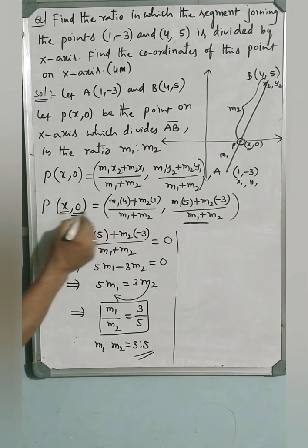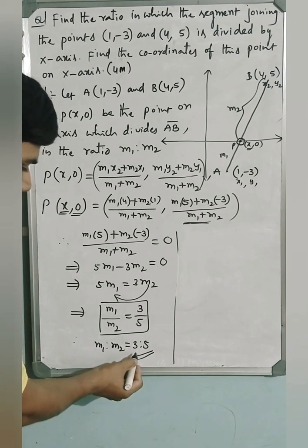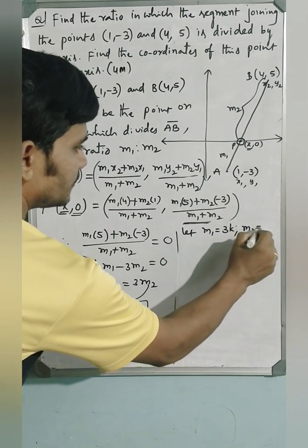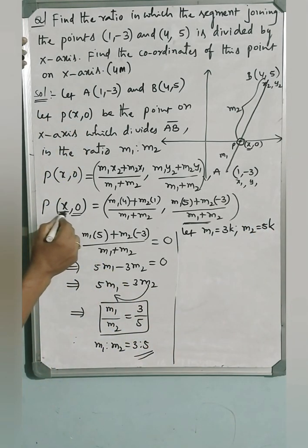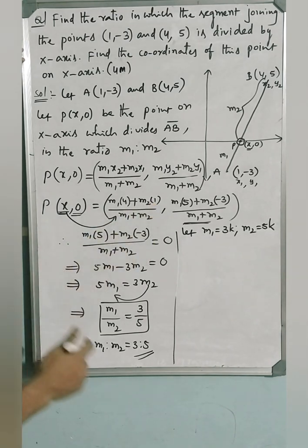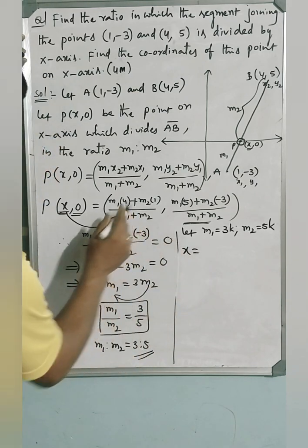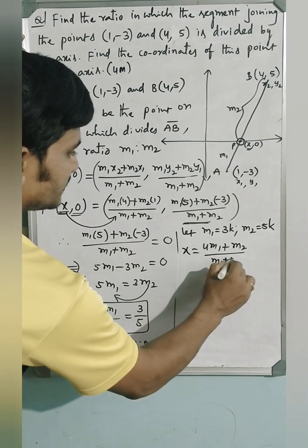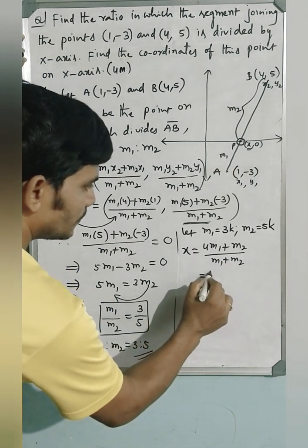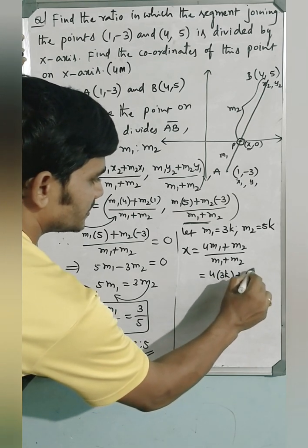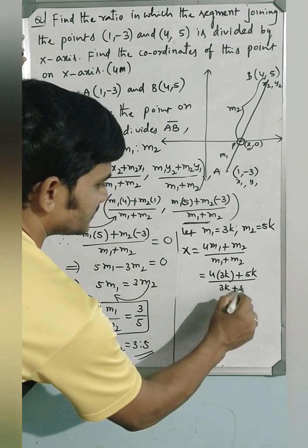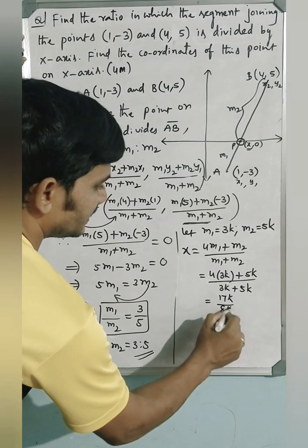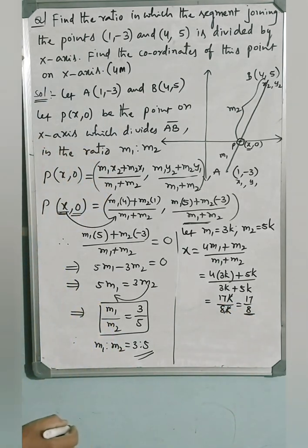Let m1 = 3k and m2 = 5k. From this equation, x = (4m1 + 1·m2)/(m1 + m2) = (4·3k + 5k)/(3k + 5k) = (12k + 5k)/(8k) = 17k/8k. The k cancels, so x coordinate is 17/8.